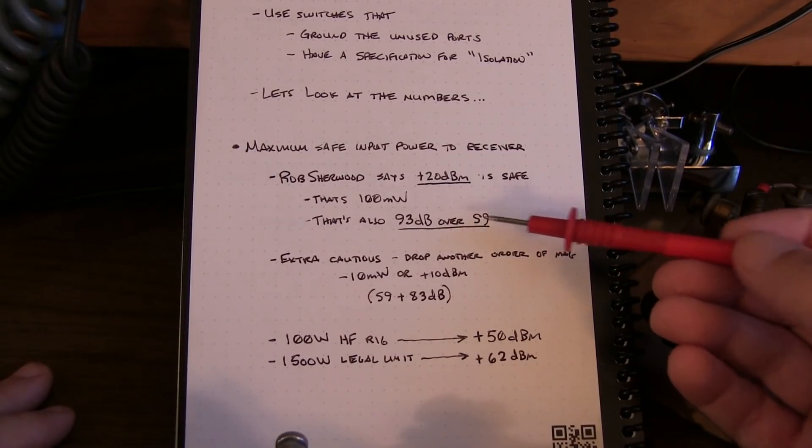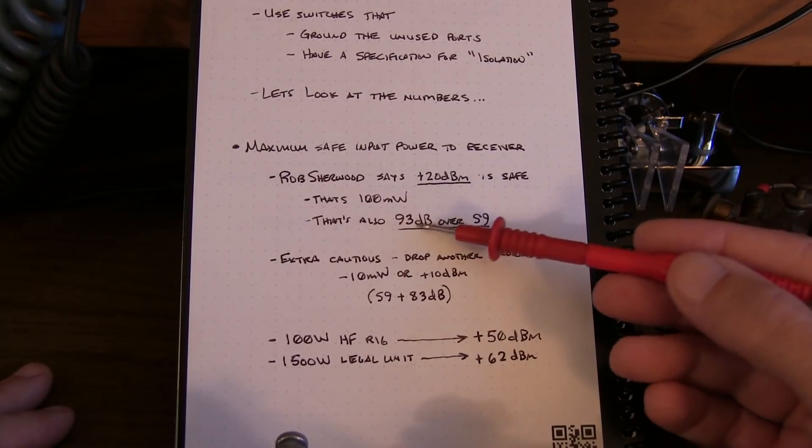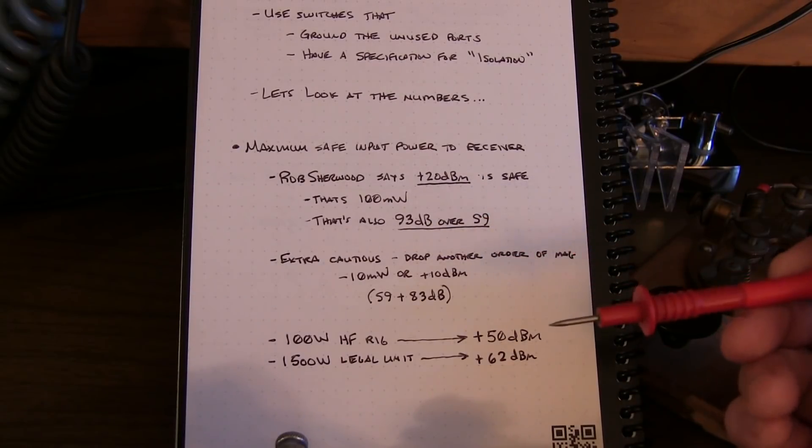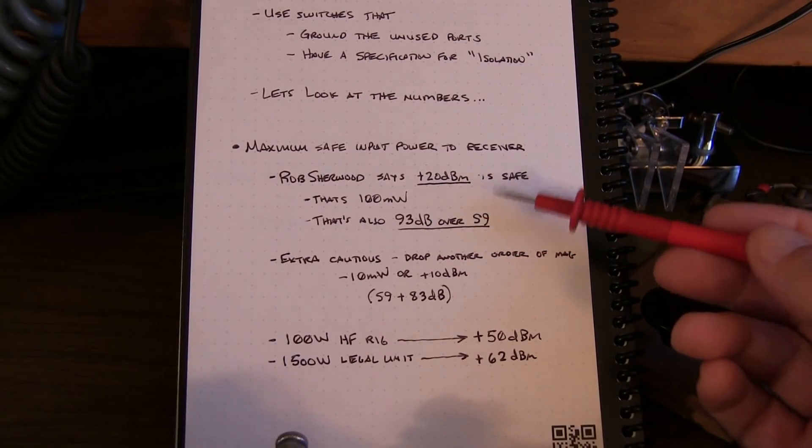Remember, S9 is minus 73 dBm. So a plus 20 dBm input, or 100 milliwatt input, would be 93 dB over S9. So that sounds like an awful lot of power. But he said that's safe for every transceiver he's ever looked at.